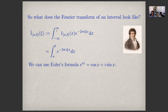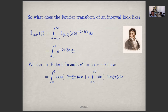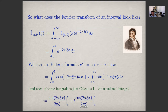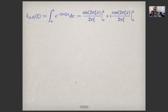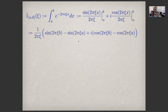The integral from negative infinity to infinity of the indicator function can be simplified. Taking a cue from Fourier, we simplify to the integral from a to b, because by definition the indicator function is zero outside the interval from a to b. We integrate the exponential from a to b, expand using Euler's formula e^(ix) = cos x + i sin x, yielding a sum of two real integrals. Evaluating at b and subtracting the evaluation at a, we arrive at an explicit answer for the transform of the interval — a difference of two complex exponentials divided by ξ, valid for all ξ non-zero.